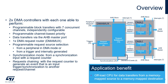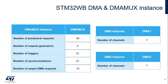Synchronization mode is available from a synchronization input or hardware event with a DMA-MUX request counter. And request chaining with the DMA-MUX request counter can generate an event that is an input trigger or synchronization to another request or channel. There are 38 peripheral requests and 4 DMA-MUX request generators, 21 triggers and synchronization inputs, and 14 DMA channels or requests.